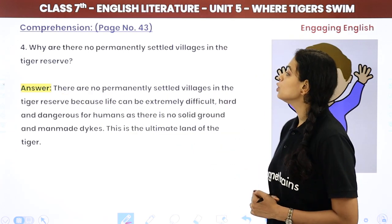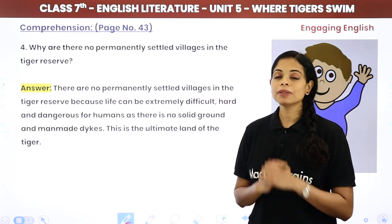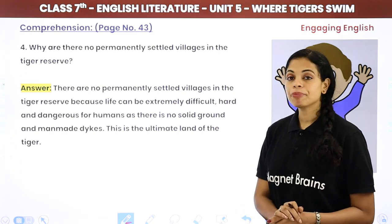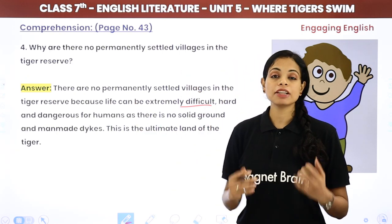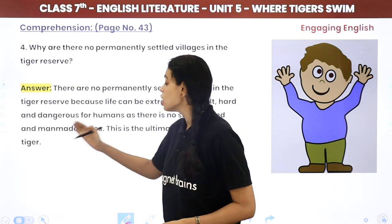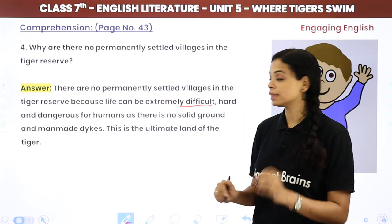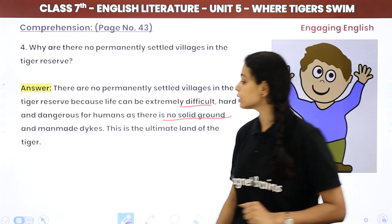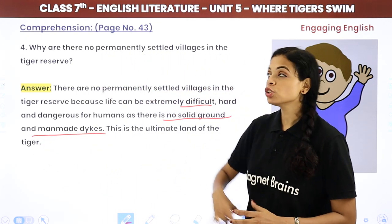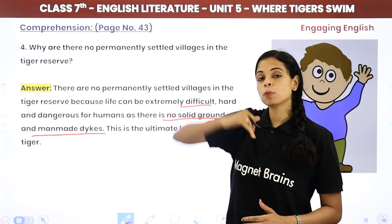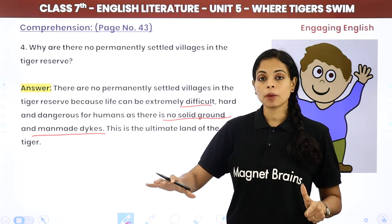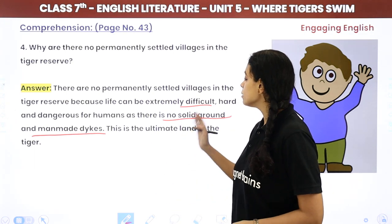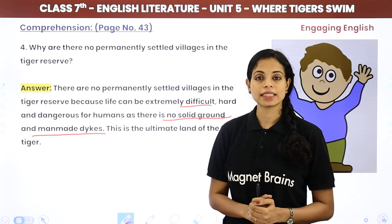Why are there no permanently settled villages in the tiger reserve? There are no permanently settled villages because life can be extremely difficult, hard and dangerous for humans, as there is no solid ground and no man-made dikes. The land is entirely swampy with no hard surface, so humans cannot build homes there. This is ultimately the land of the tiger, where humans cannot settle.